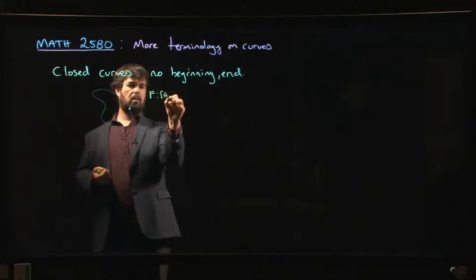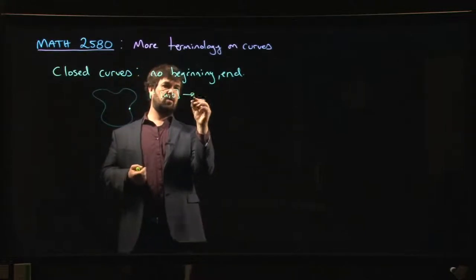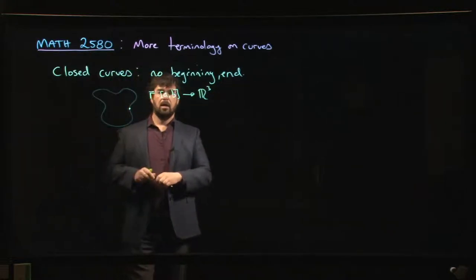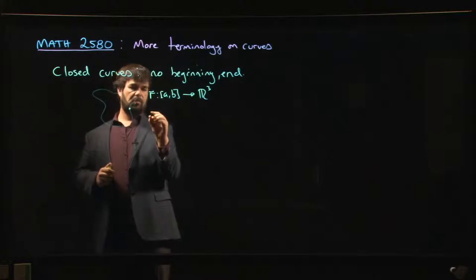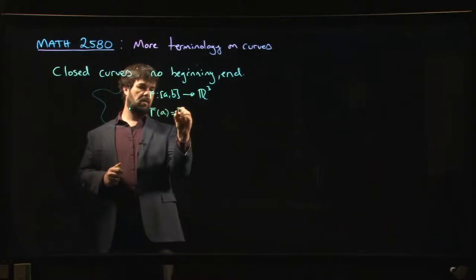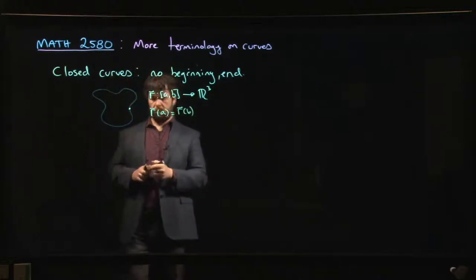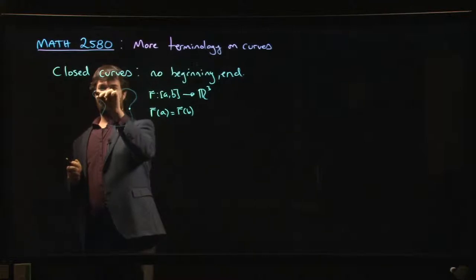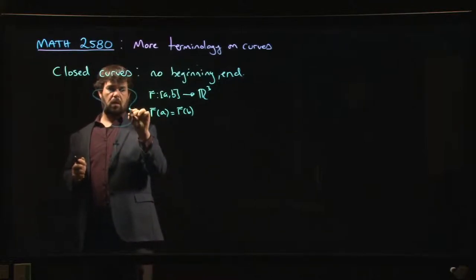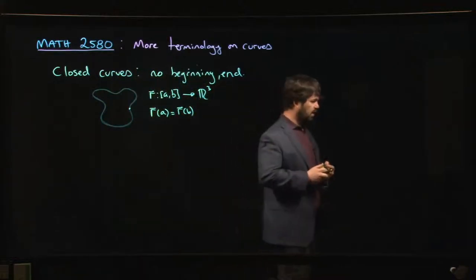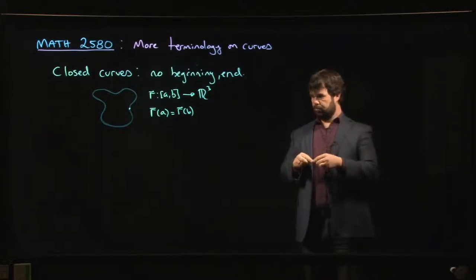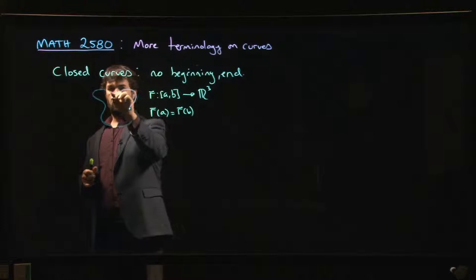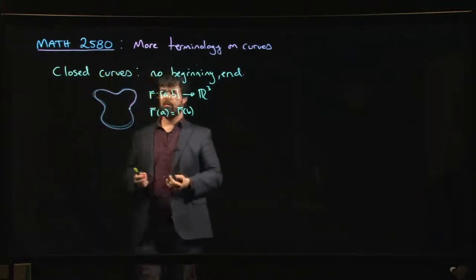We might define a map r going from [a, b] into R³ (or Rⁿ). To specify that this should be a closed curve we simply say that r(a) should equal r(b). The idea is that you start at some point, go around the curve, and end at the same place you began. So a closed curve has no beginning and no end — you start at one point, go around, and return to that same point.